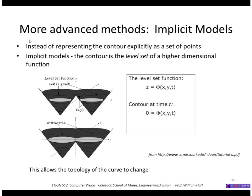Just a few more variations on this method. One is called implicit models, or level sets specifically. The idea is instead of having an explicit curve, we simply look for the level set of a function — meaning all the points where that function is equal to zero. This allows the topology of the curve to change, for example to split apart or to join.